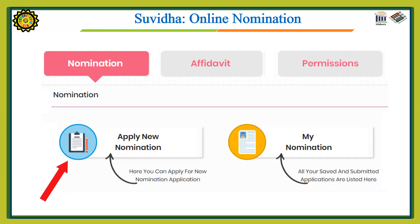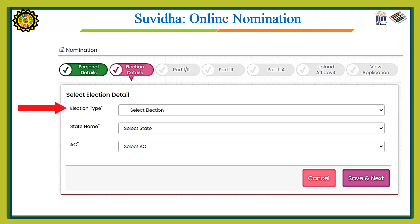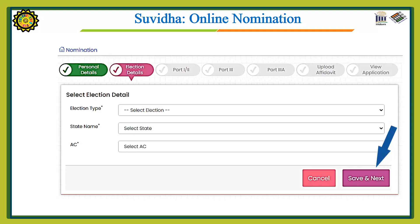After pressing the Save button, a new window will appear. If you are applying the nomination form for the first time, select 'Apply New Nomination Form.' If you are already working on a nomination form, select 'My Nomination Form.' Since we are going for a new nomination form, we will select 'Apply New Nomination Form.' Now select the election type and the state name from which you are contesting, then select the AC name and press Save and Next.